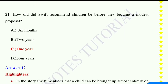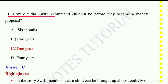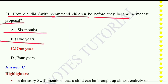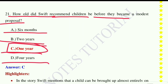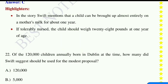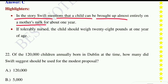Question number twenty-one: How old did Swift recommend children be before they are used in A Modest Proposal? Option A: six months, option B: two years, option C: one year, option D: four years. The correct answer is option C, one year. In the story, Swift mentions that a child can be brought up almost entirely on mother's milk for about one year, and if tolerably nursed the child should weigh 28 pounds at one year of age.